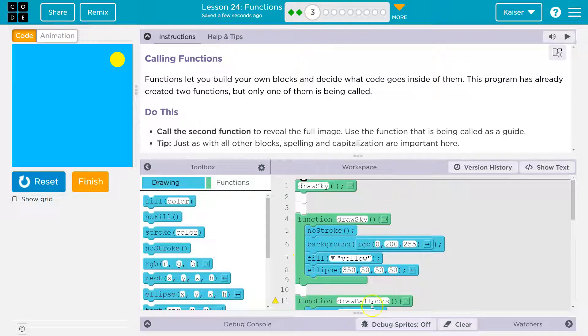All right, so here's the box of code we made. We put this code inside of our box, right? We stacked it up, so it still runs in this exact order, but the name of our box of code is draw sky.